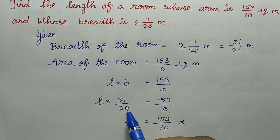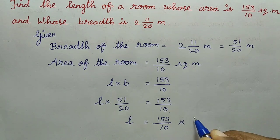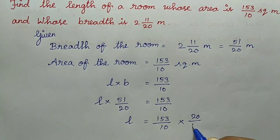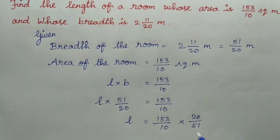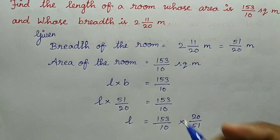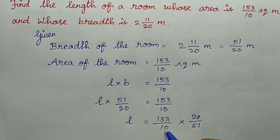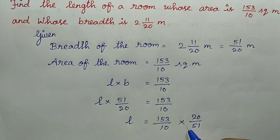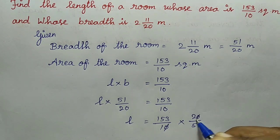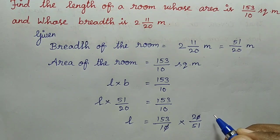We use division of fractions. This involves taking the reciprocal. So we will find the reciprocal and then cross multiply the values and cancel them.